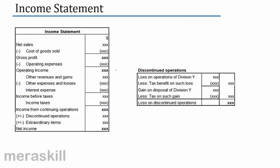Let us see how it is presented. We have already done this income statement — cost of goods sold, gross profit, operating income, other expenses deducted, income before taxes, income taxes — and here we have income from continuing operations. We call this continuing operations because there is a discontinued operations item. Whatever value of discontinued operations — plus or minus — and then plus or minus extraordinary items, gives you the net income.